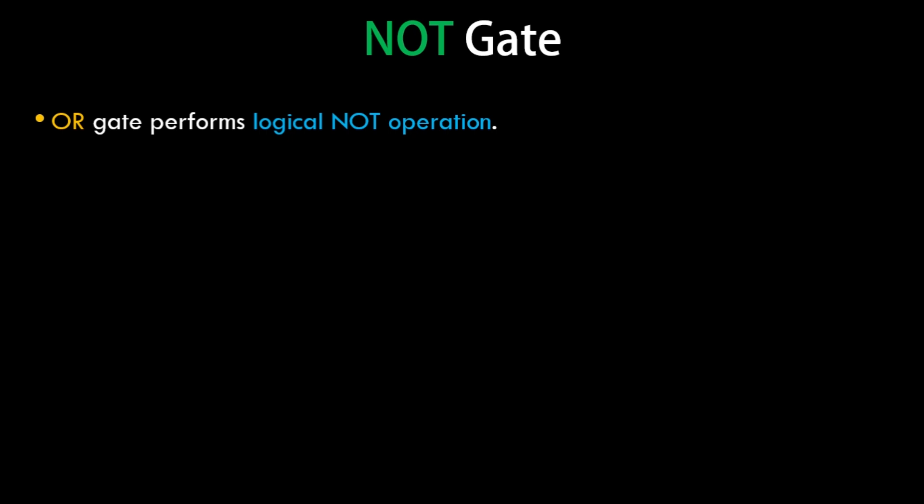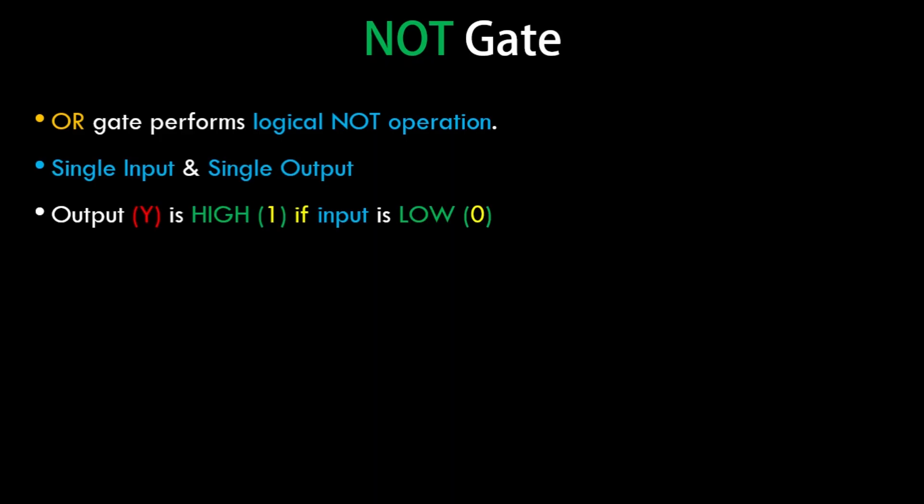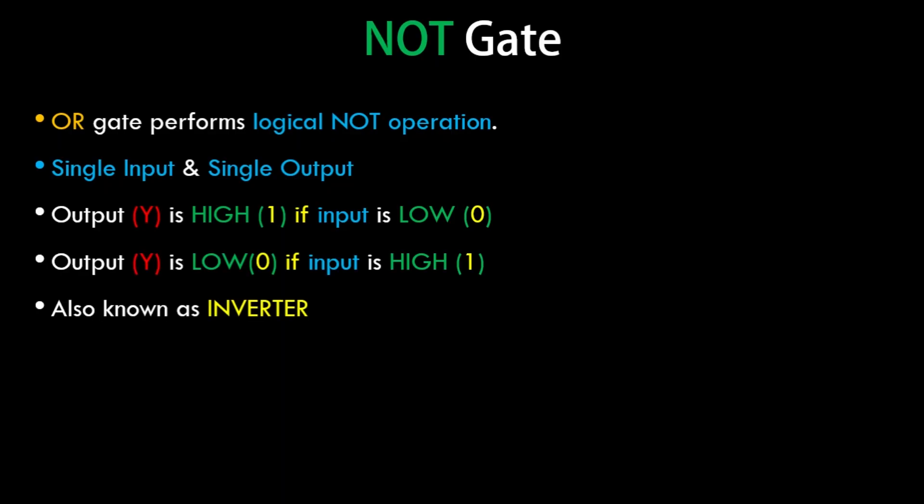The NOT gate is a special gate — it has only a single input and single output. It performs a logical NOT operation. If you provide a 0 value it inverts it to 1; if you provide 1 it inverts it to 0. The output Y is high if the input is low, and low if the input is high. It is also known as an inverter.